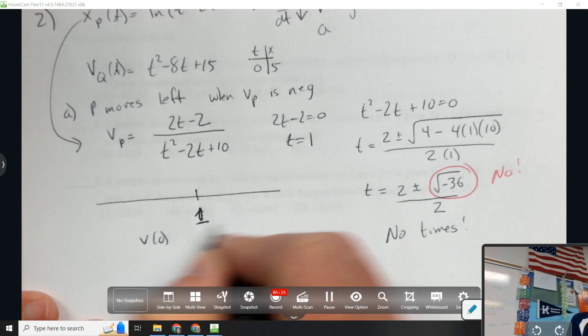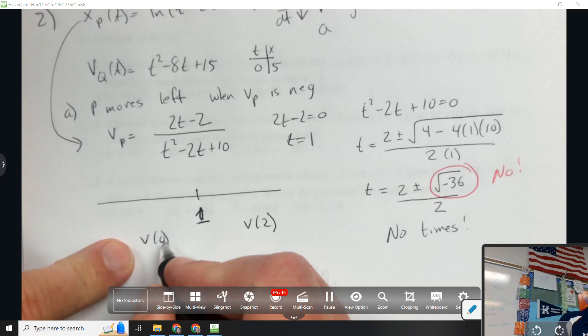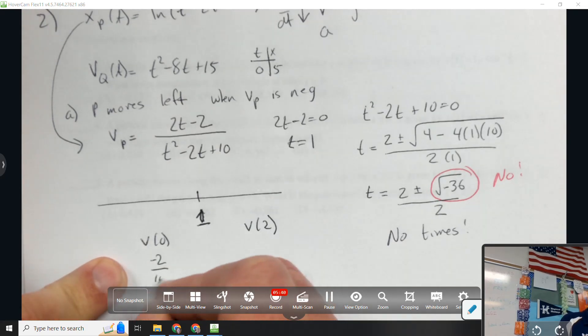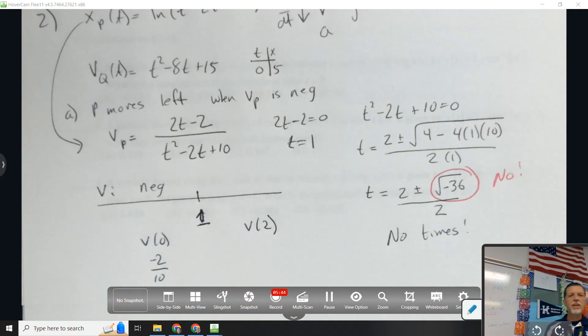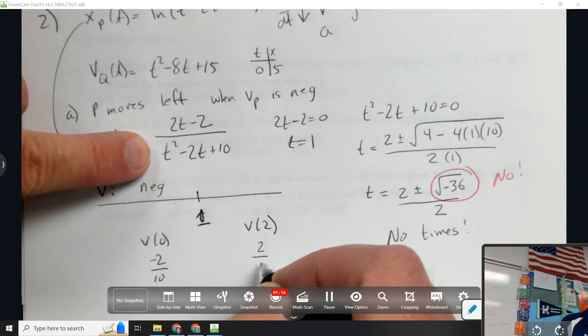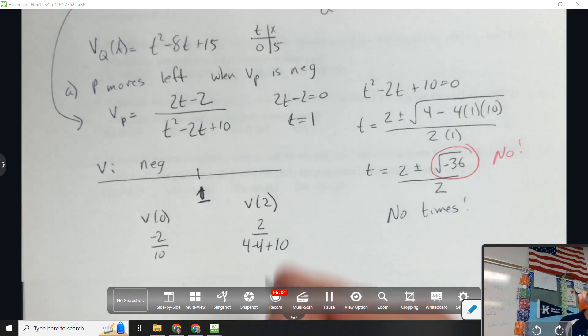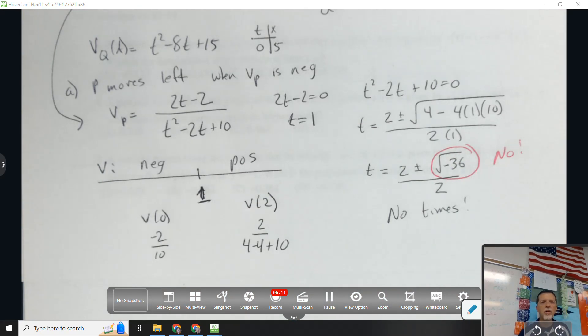So the only thing I'm worried about is t = 1. Let's find V(0) and V(2). V(0) would be -2/10, so that would be negative. So my velocity from 0 to 1 is negative. Velocity at 2: 2 times 2 is 4 minus 2 is 2, and the bottom is positive. So now let's answer the question. P moves left on 0 to 1.